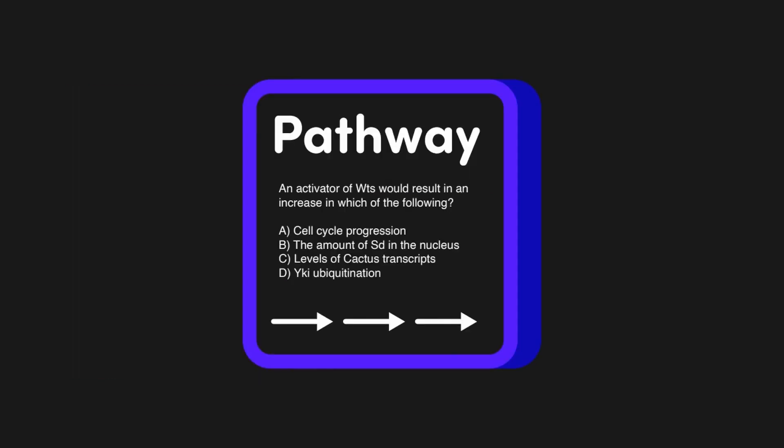Now, let's go ahead and review that pathway question so we can see why we actually need to chart things out. We can't just pinpoint that one specific piece of information. When we read this question here, the first thing that we get is it's an activator of WTS. So we're already messing with the pathway and how it works, and we didn't do that in the previous question. Then it asks, this would result in an increase in which of the following. It's basically saying, hey, if we change this one part of the pathway, how does the other part of the pathway change? And then it mentions things in the pathway. Cell cycle progression, the amount of SD, the levels of cactus, and then YKI ubiquination.